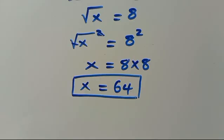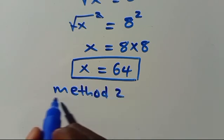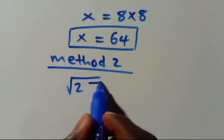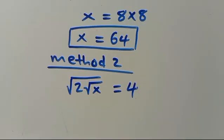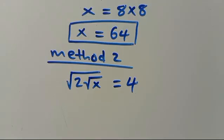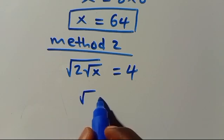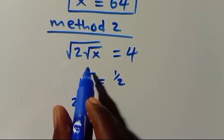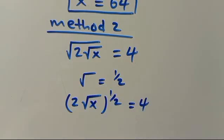Now for method 2. Recall that we have √2 · √x = 4. A square root is the same as an exponent of 1/2, so we can rewrite this as 2 multiplied by x to the power of 1/2, equals 4.